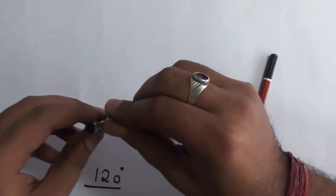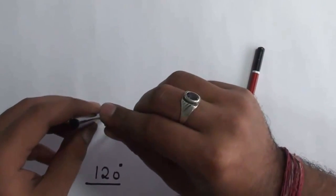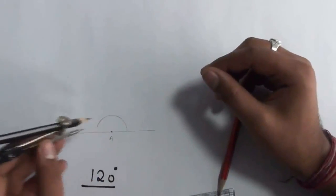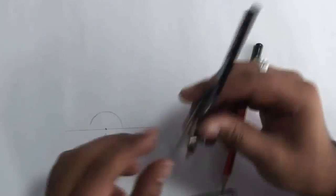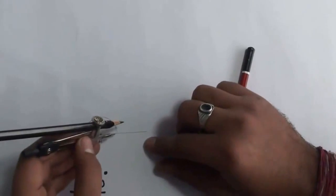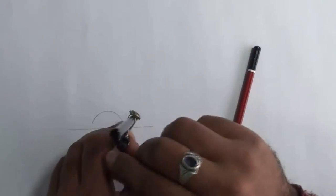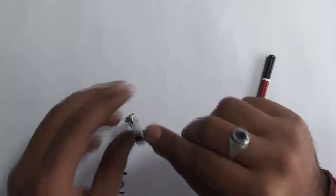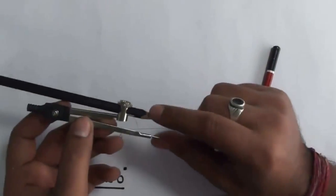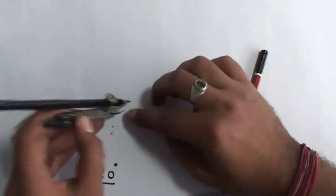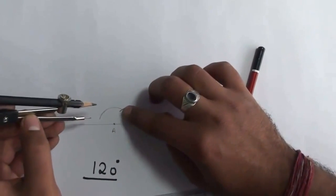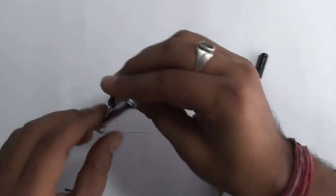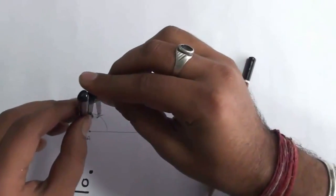Please remember, don't open your compass very big because it will make it difficult for you to draw the angle. We made this arc. Now, starting from the right-hand side base point, draw an arc — the compass remains open at the same width. This gives the point of 60°. From this 60° point, make another arc on the main arc.